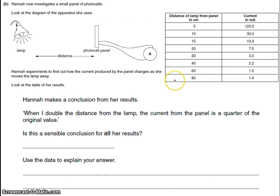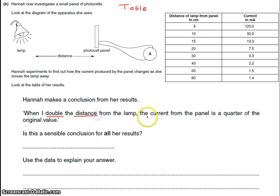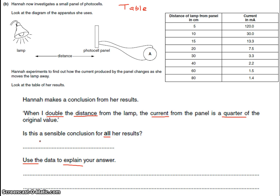The next question is an example that no student has an excuse for not attempting, because this is a table question — you don't actually need to know much, you just need to read the table and use the information. Hannah makes a conclusion: when I double the distance, the current is a quarter of the original value. Is this a sensible conclusion for all of her results? The exam board has put 'all' in bold, which means they're stressing something. You should underline that and use data to explain your answer. The answer is no, and you must quote numbers.